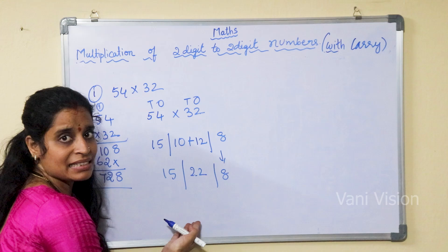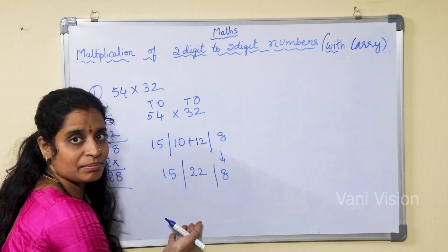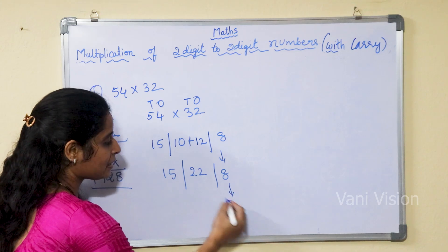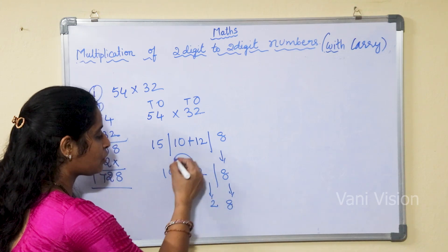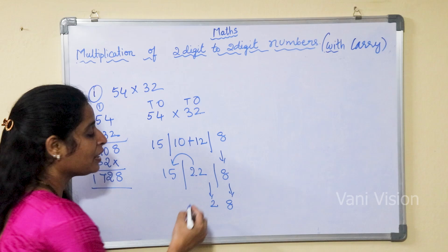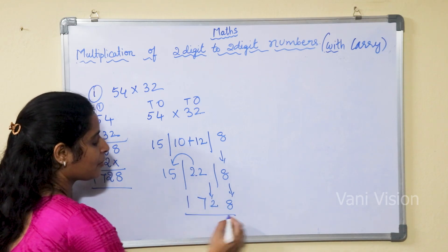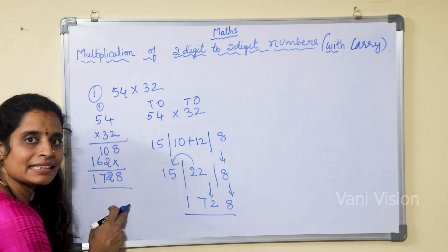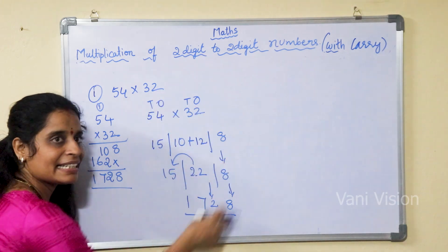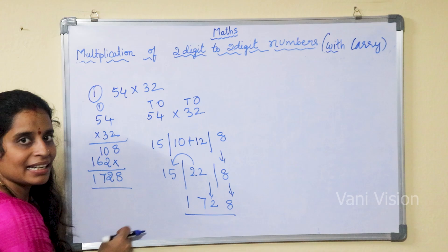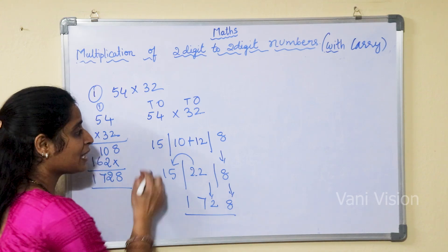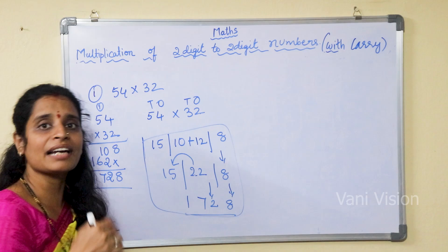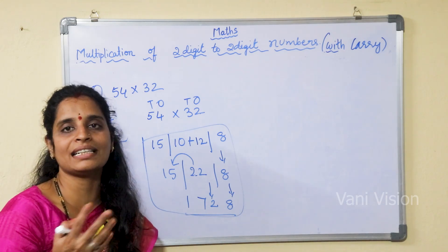Now we have to do the balancing here. We have learned the balancing method, and the same balancing we are going to do here. So 8 as it is, 2 as it is. Now this 2 will go and add with 5, and it will become 7, giving us 1. So our answer is the same — 1728. Is it easy? Yes. In the simplification part we can use this method easily and find our answer in an easy way.